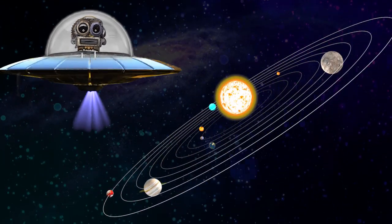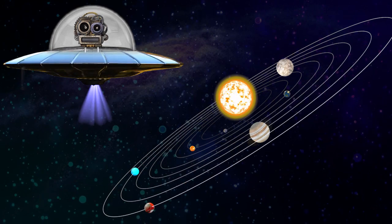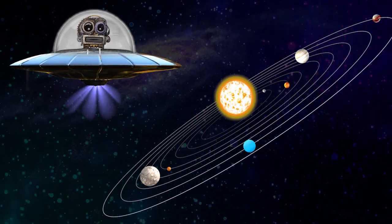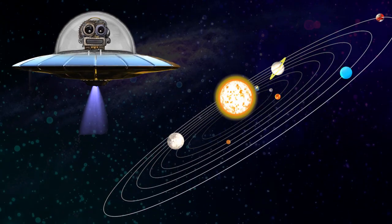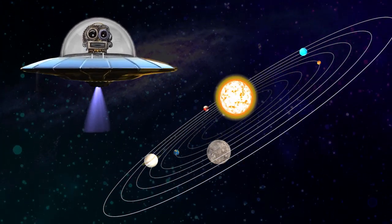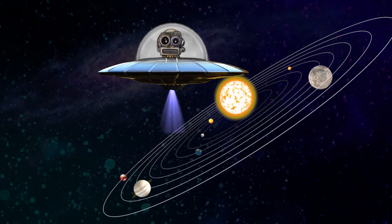This is how our solar system looks like, with planets revolving around the sun. The sun is the main source of light for all the planets. Our solar system has eight major planets.